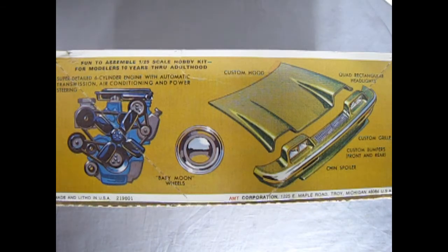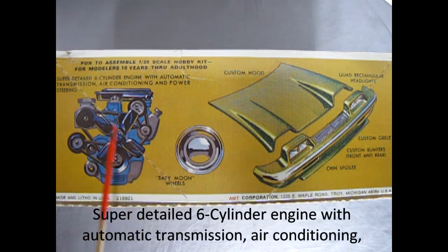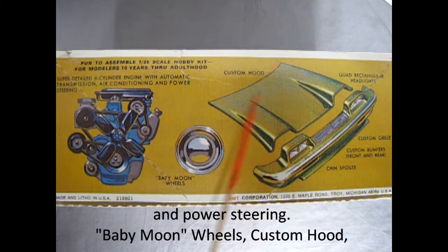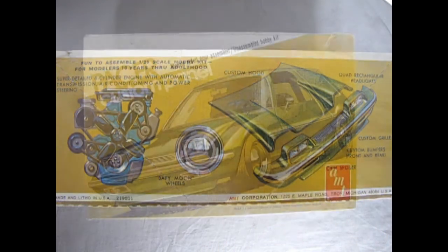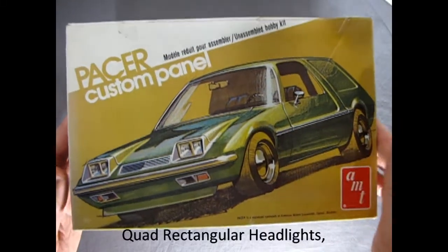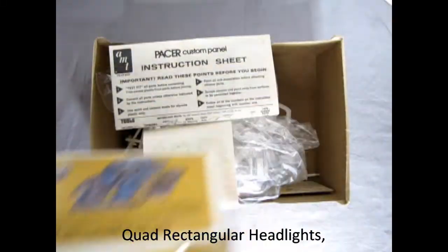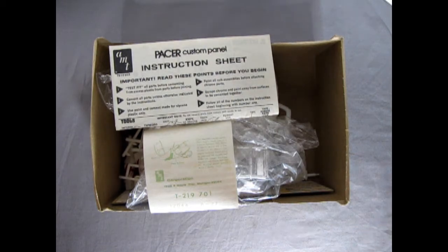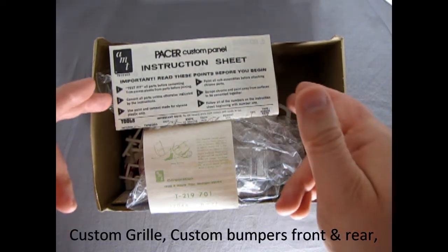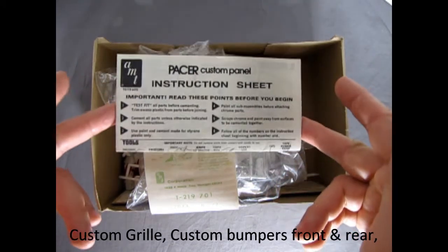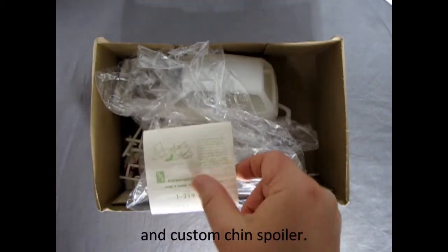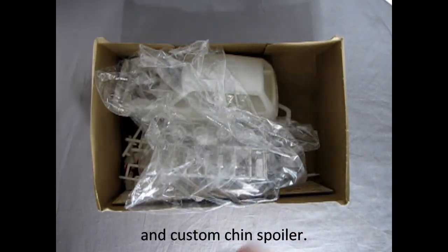On this side of the box we can see this amazing American Motors straight six engine, baby moon wheels, the amazing custom hood and the custom grille with custom bumpers and a chin spoiler. Now we'll lift the lid off this amazing kit and see what's inside. This is a model I got second hand so there's going to be some interesting things about it. But first off we have our instruction sheet right here. There's our decals which we'll take a look at at the end.